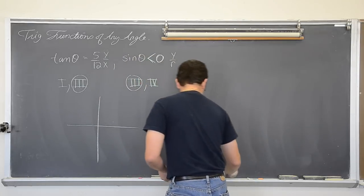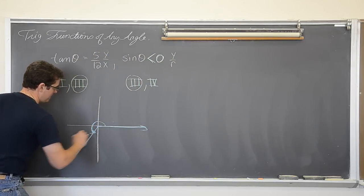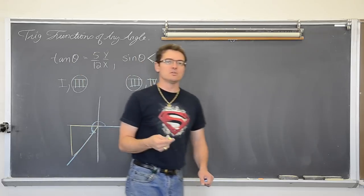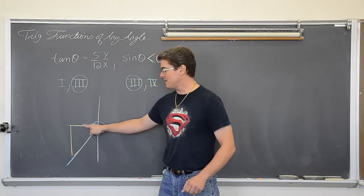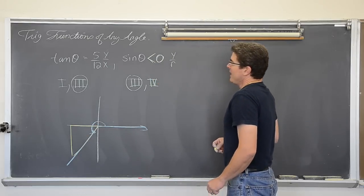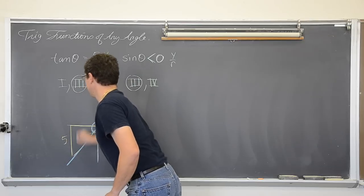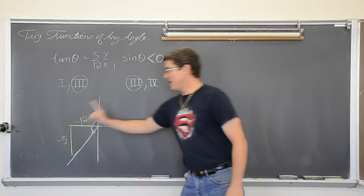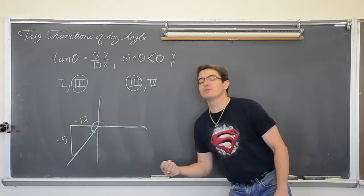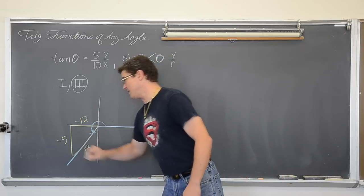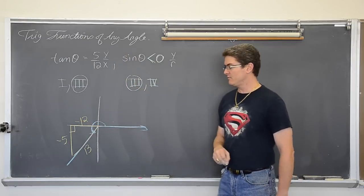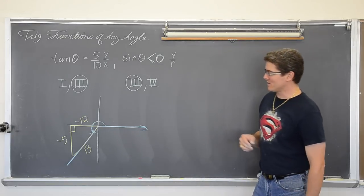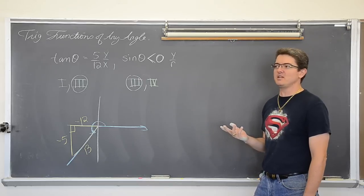So I draw a standard position angle in quadrant three with a reference triangle against the x-axis. Reference angles are the acute angle — the number of degrees between the terminal side and the x-axis. Tangent is y over x, and in quadrant three both x and y movements are negative. By the Pythagorean theorem: 5 squared plus 12 squared equals 169, so the hypotenuse is 13. Now I have the three sides and can set up any trig function. The sine of theta is y over r, and cosine of theta is x over r.